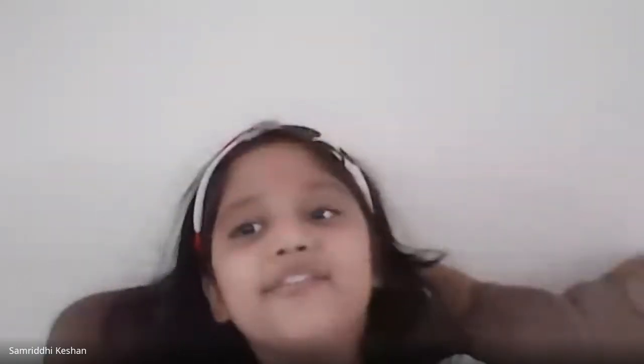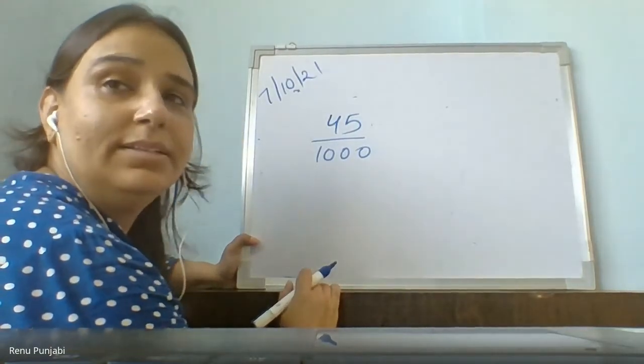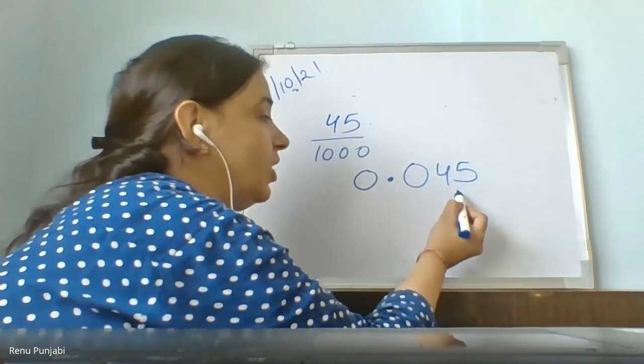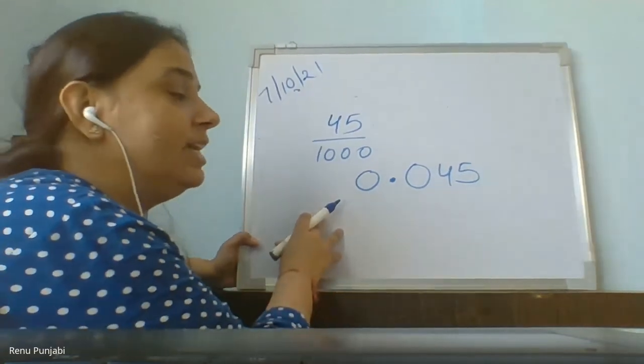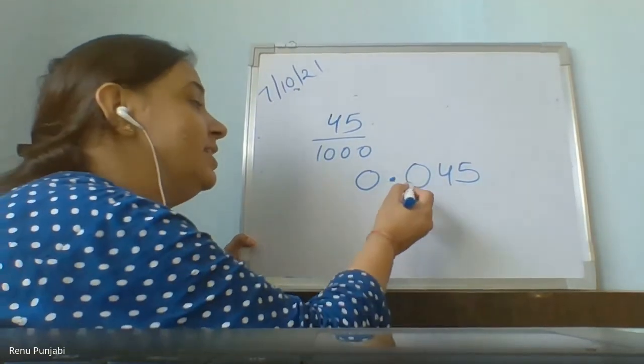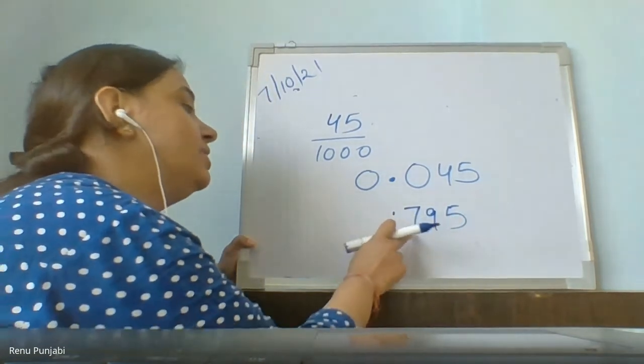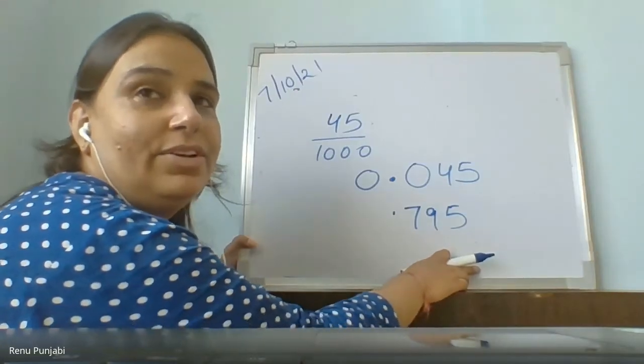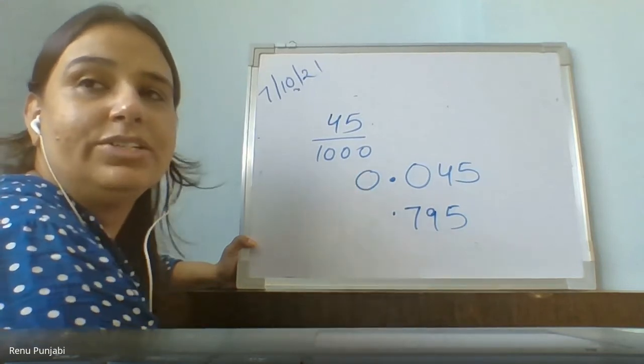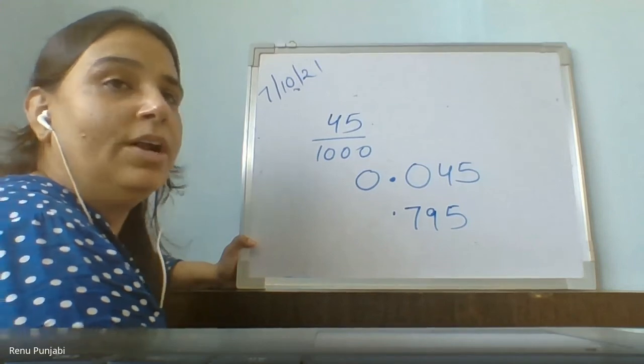If it is 45 upon 1000, how will you write the decimal? We will write 0.045. And when a decimal is there, we cannot read the digits after the decimal together. We never read the numbers after the decimal as a combined number — we read them single, single. If it is 7, 9, 5 — whether 3 digits or 2 digits, you cannot say it is seventy-nine — you say 7, 9, 5. After the decimal, we read the digits as single digits.